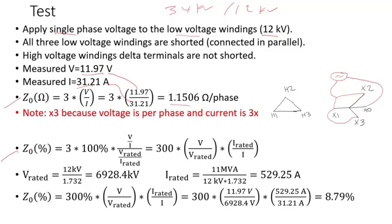To calculate the zero sequence impedance in percent, since voltage is applied to the 12 kV side, the rated current is calculated line-to-neutral using the base MVA. Plugging in the numbers, the zero sequence impedance is 8.79%.